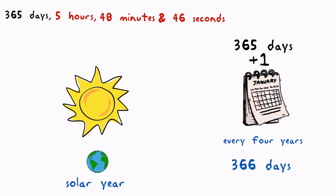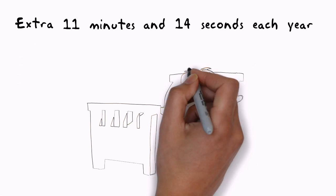The problem is that because the solar year isn't exactly 365 days, even adding a leap day every four years means that the calendar is still out of step by 11 minutes and 14 seconds each year. I'm sure we could do something useful with these extra minutes.